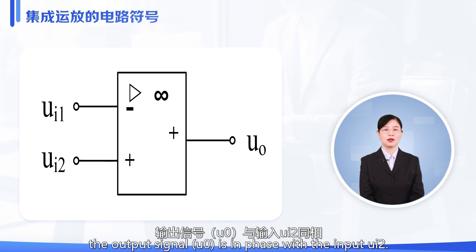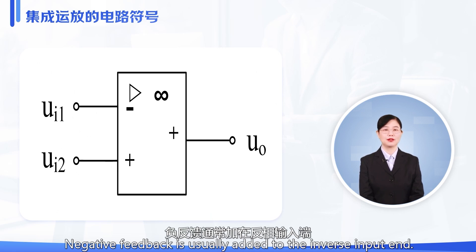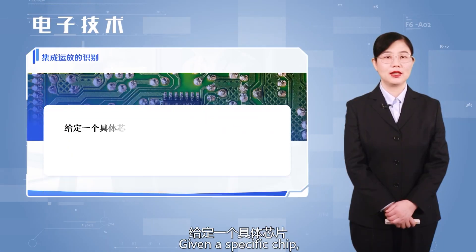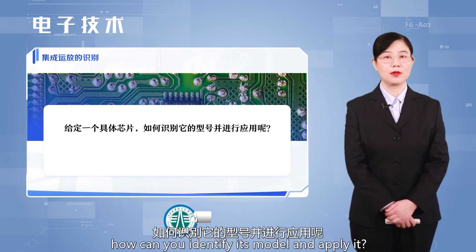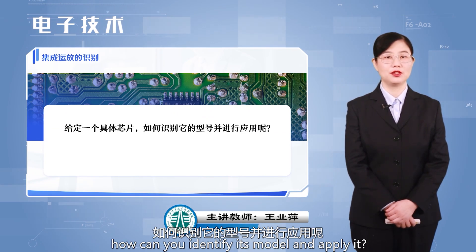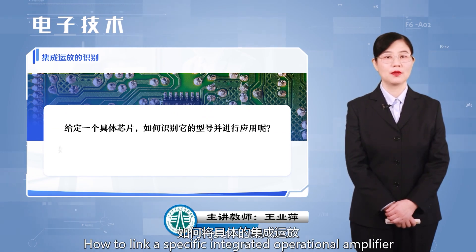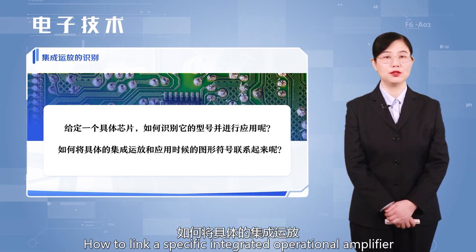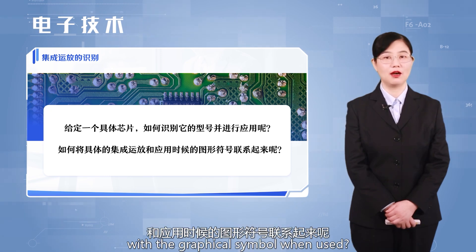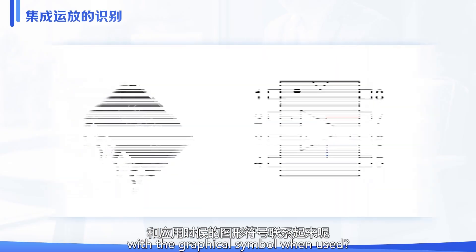Negative feedback is usually added to the inverting input end. Given a specific chip, how can you identify its model and apply it? How do you link a specific integrated operational amplifier with the graphical symbol when used?